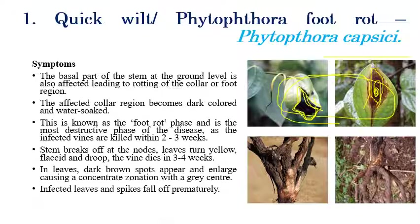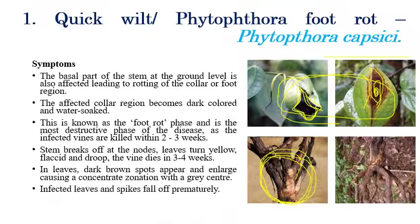Coming to stem symptoms, stem breakdown and pitting of the stem can be seen, along with yellowing of leaves due to this stem breakdown. Flagging and drooping of leaves can happen due to wilting and drying of the stem.